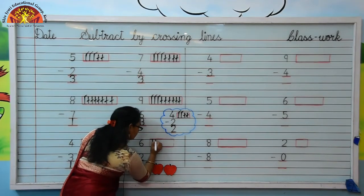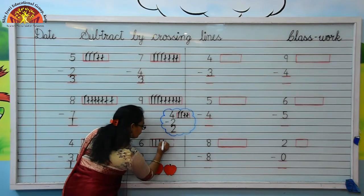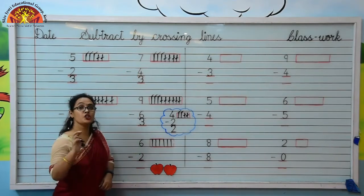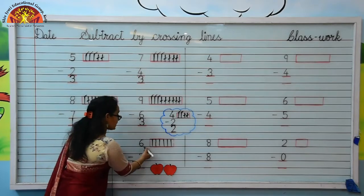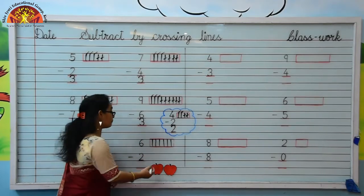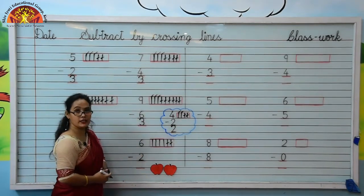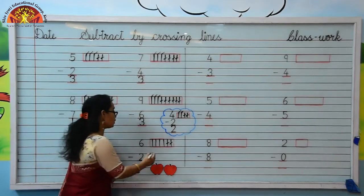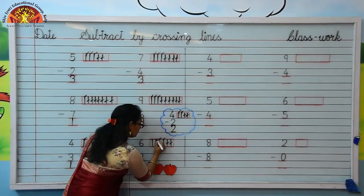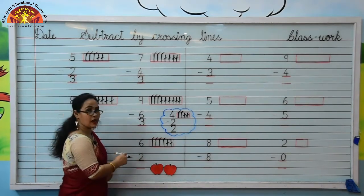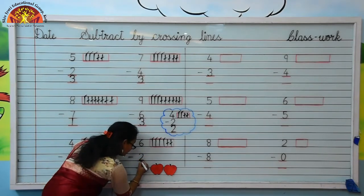Let's draw the lines: 1, 2, 3, 4, 5, 6 and cross them: 1, 2. Kids, how many lines are left here? Let's count: 1, 2, 3, 4. Yes, 4 lines are left here. So kids, your answer is 4. Write 4.